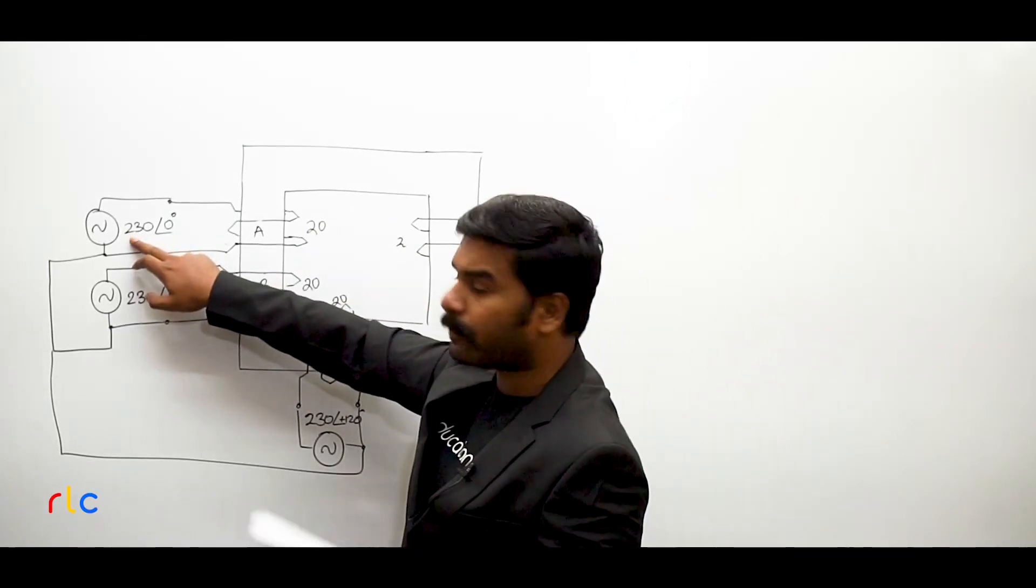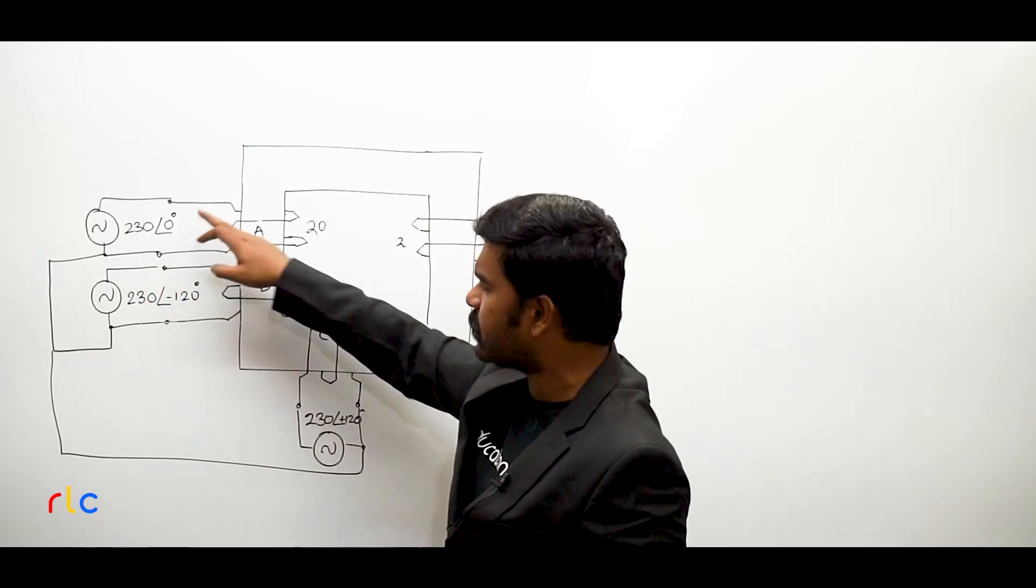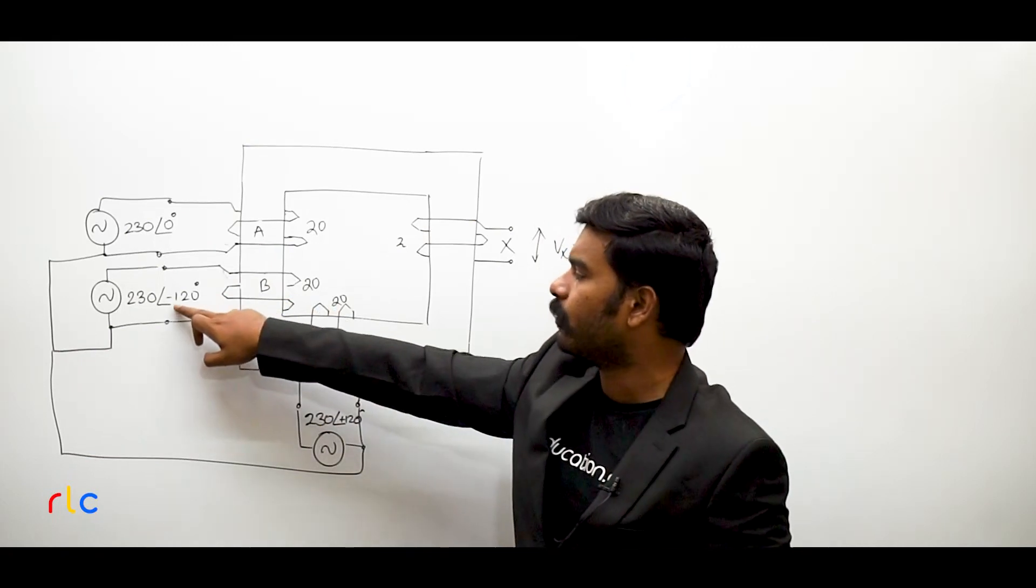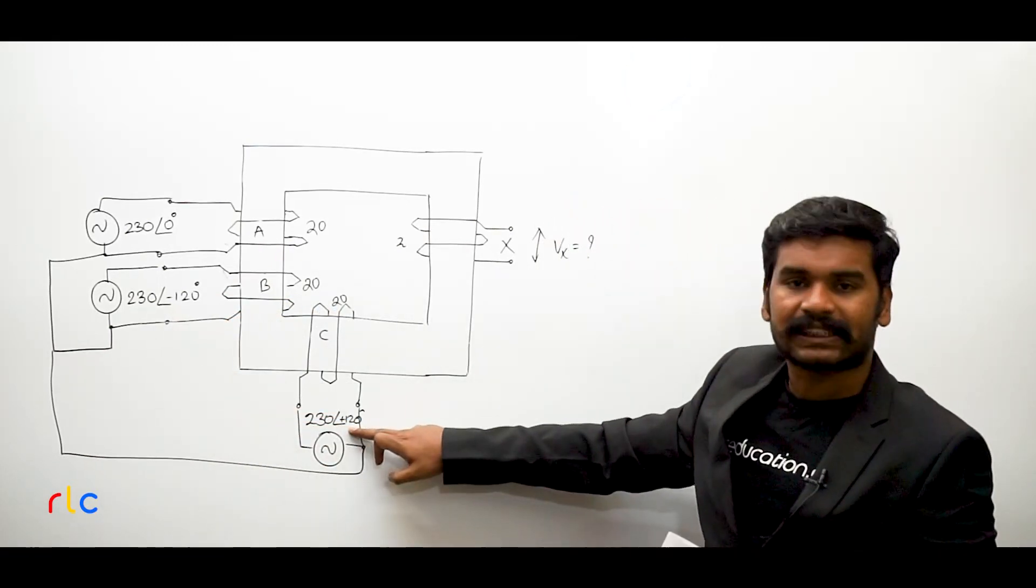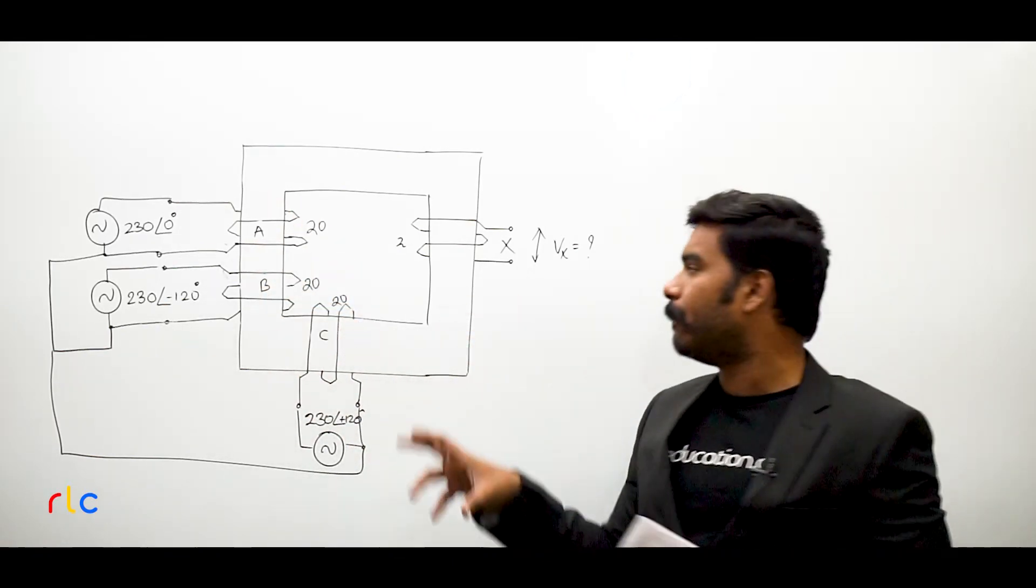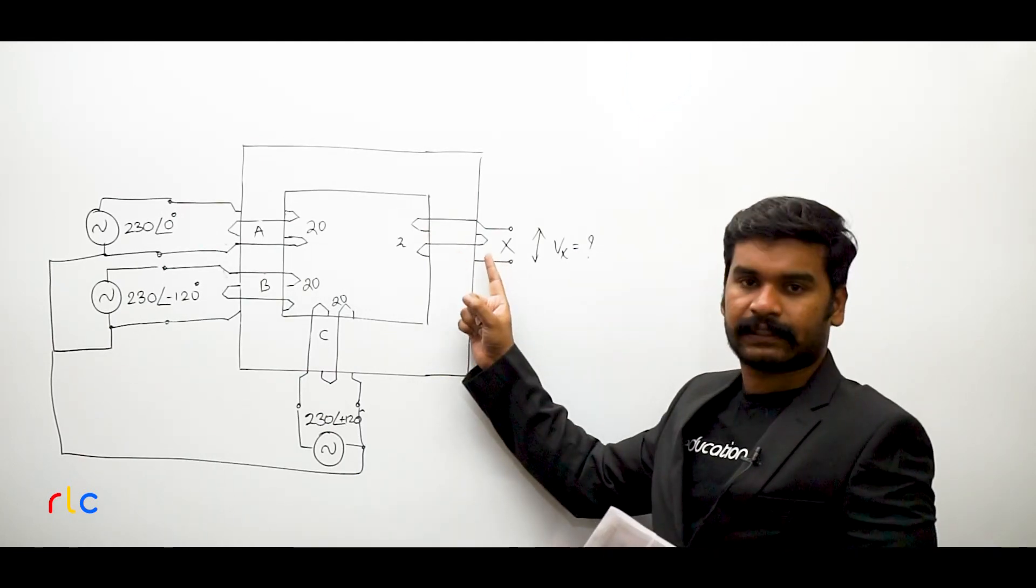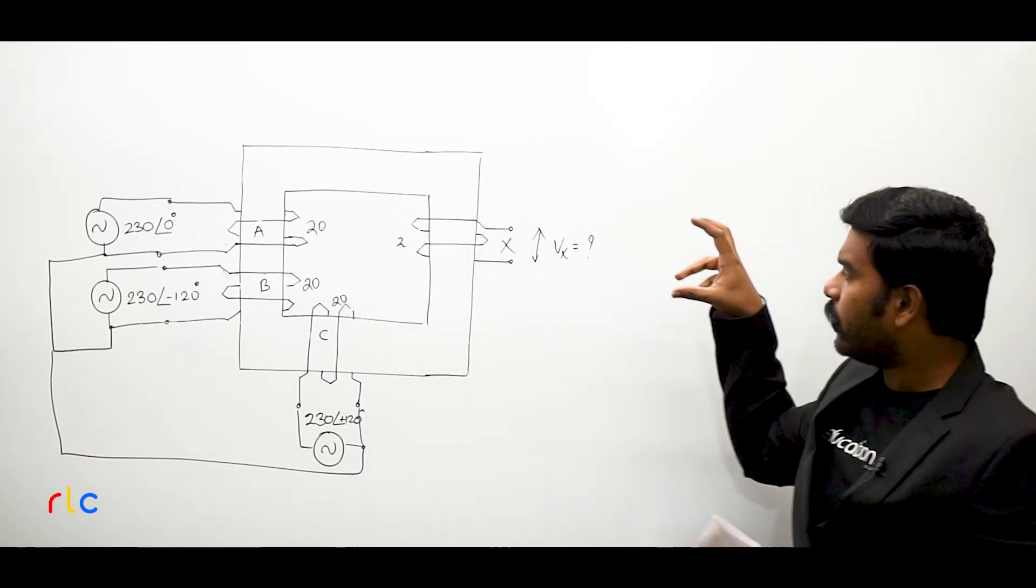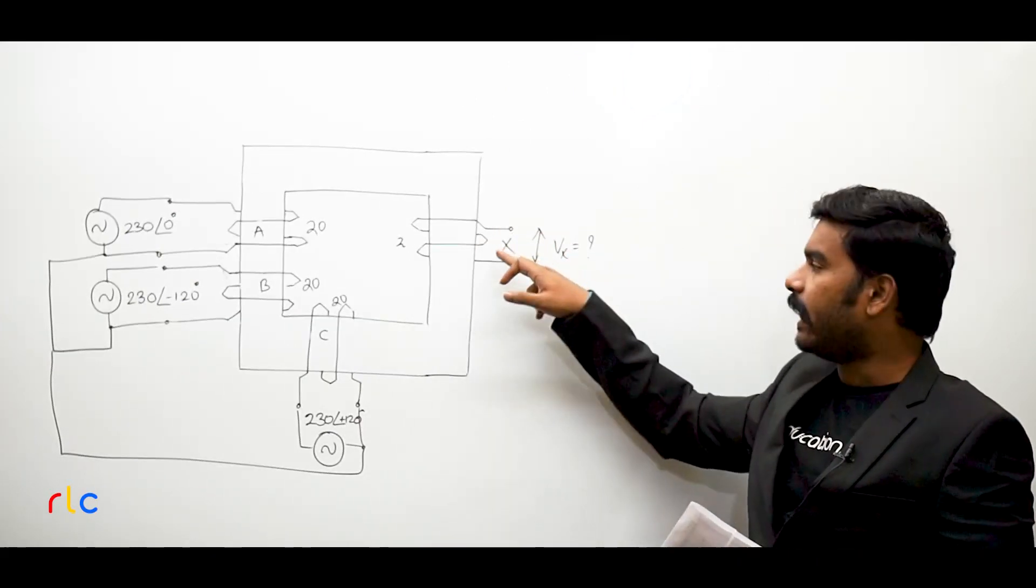The source parameters are: voltage is 230 volts at angle 0 degrees, VB is 230 volts at minus 120 degrees, exactly balanced, perfectly balanced three-set of voltages. There is another winding called X, this is the output winding. You need to find out what is the no-load terminal voltage VX in this winding.